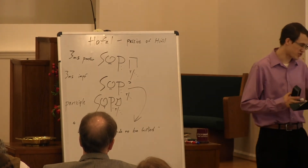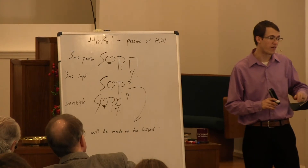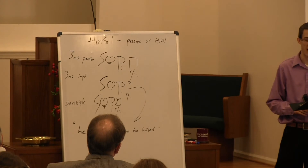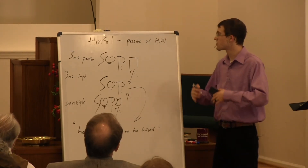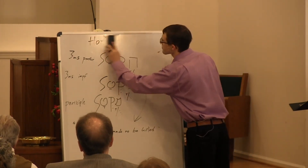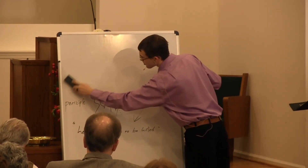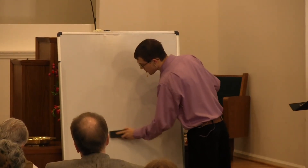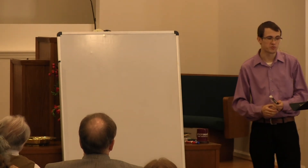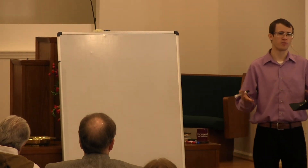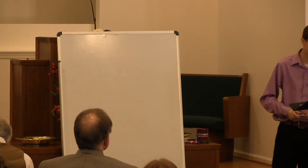Going back to our synopsis chart: we've got the qal, the piel, the pual, the hiphil, and the hophal. All we have left to look at is the niphal and the hitpael, and those are going to come with their own set of identifying characteristics. They are reflexive — the niphal's reflexive, and I believe the hitpael is as well — and we'll cover those in weeks to come. Then you'll have most of the Hebrew verbal system. There are a few other verbal systems used, like the hitpoel and the hishtaphel, but you can count on both hands the number of times those are used in the Old Testament — very sparse usage.